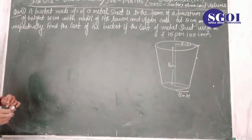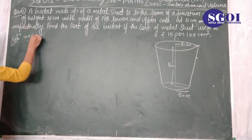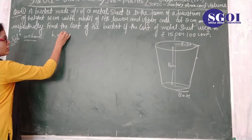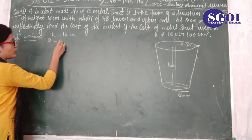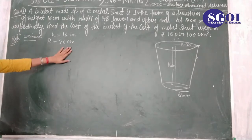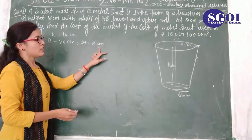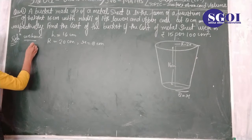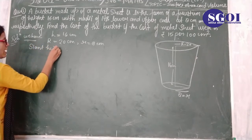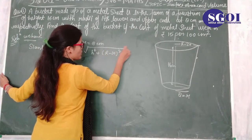Now students, let's see the solution. We have H = 16 cm, which is the height of the bucket. Capital R = 20 cm, which is the radius of the top surface of the bucket. Small r = 8 cm, which is the radius of the bottom of the bucket. Now, for the metal sheet, firstly find the slant height. Slant height L is equal to the square root of h² plus (R minus r)².